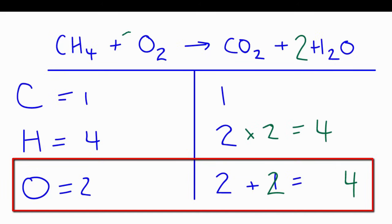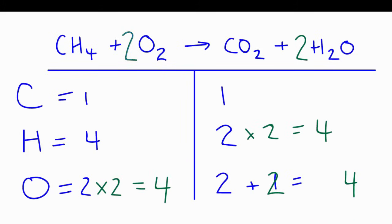I go back to the reactants, and I put a two right here. Two times two equals four. And now all of the atoms on each side are balanced. I have the same number of each atom on each side of this equation.